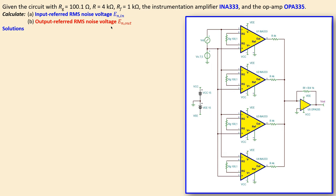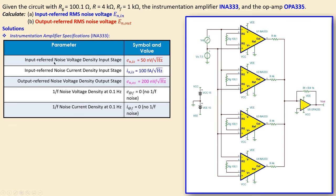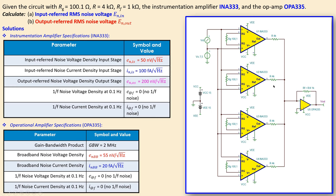Let's look at the instrumentation amplifier specifications from the datasheet. For the input stage we have two specifications: the noise voltage spectral density and the noise current spectral density. For the output stage we have only the output noise voltage spectral density. The 1/f noise parts for both noise current and noise voltage are zero for the INA333. Similarly, we have the OPA335 specifications — gain bandwidth product, broadband noise voltage density, and broadband noise current density — with no 1/f noise parts.